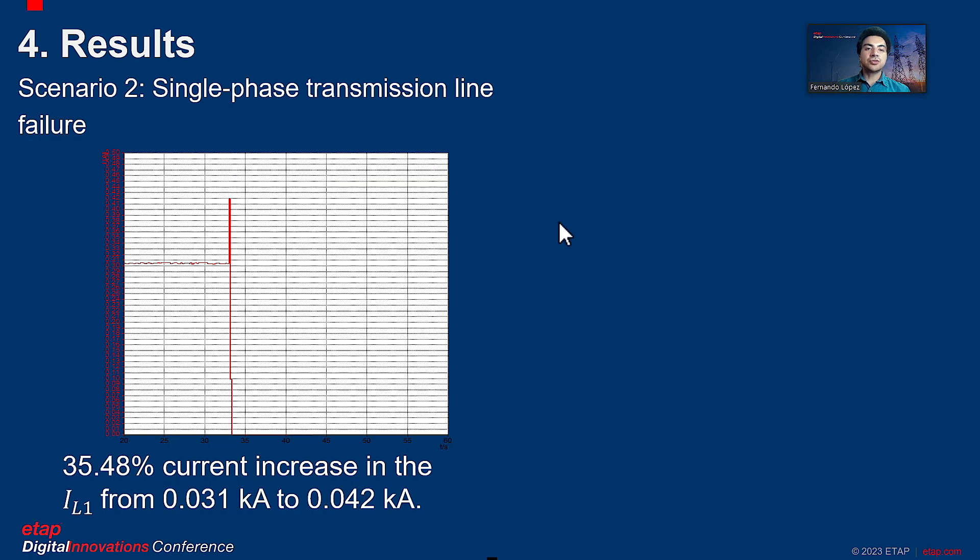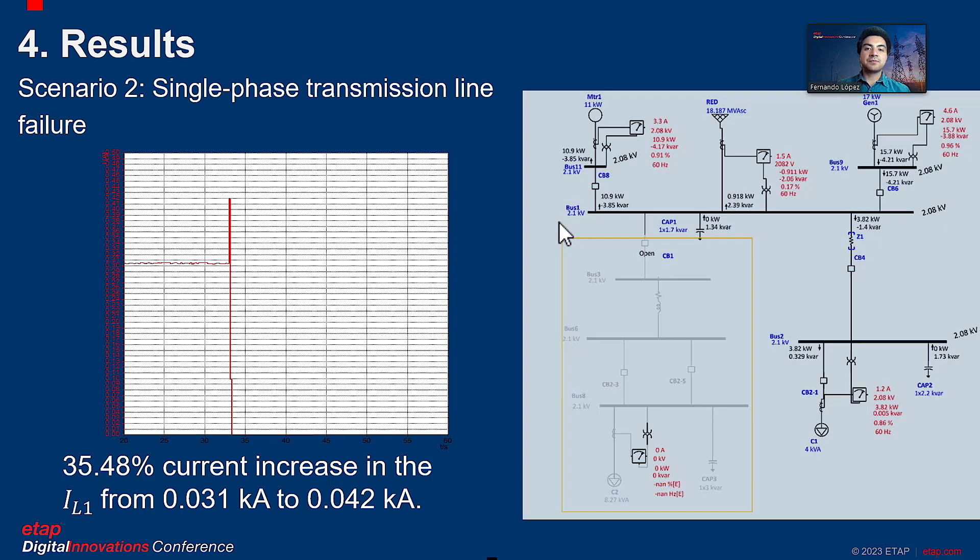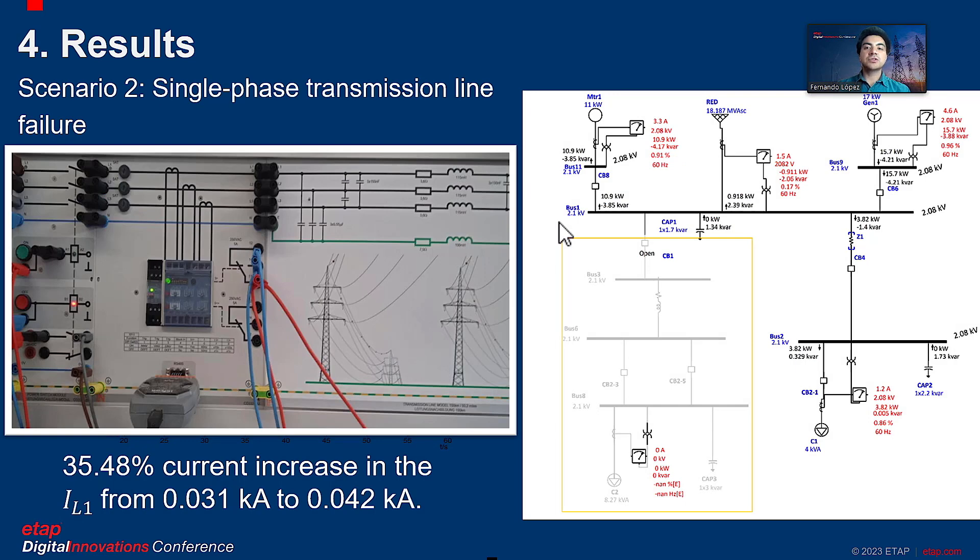Scenario 2: Single phase fault on the transmission line. After capturing the real-time data, we increase the load on consumer C2 so that the current increases, as shown in the graph, to 35.48% on line 1. So the overcurrent relay protects the transmission line. The chart shows how the relay acts and opens the circuit breaker CB1.